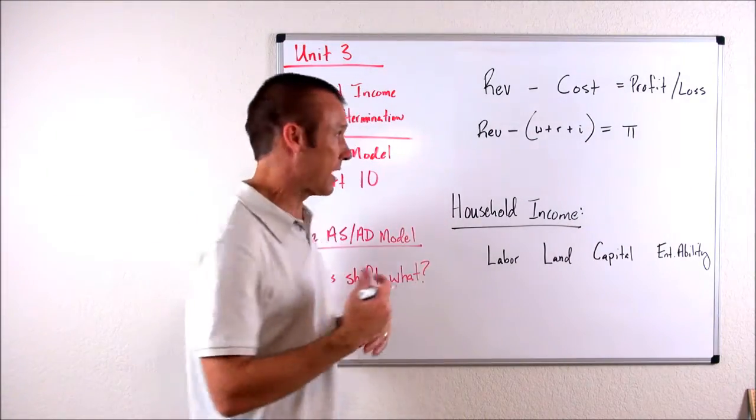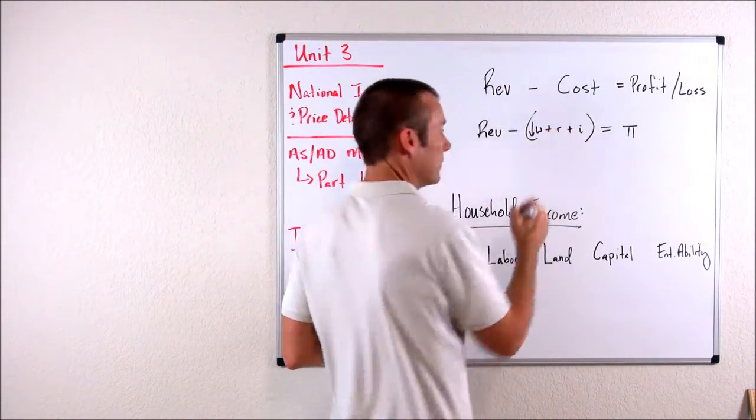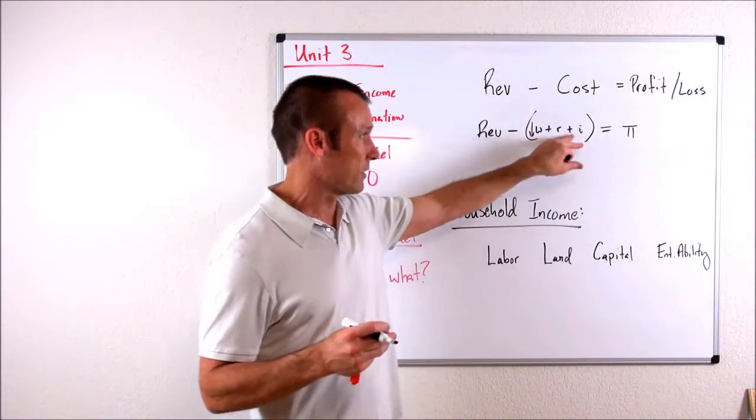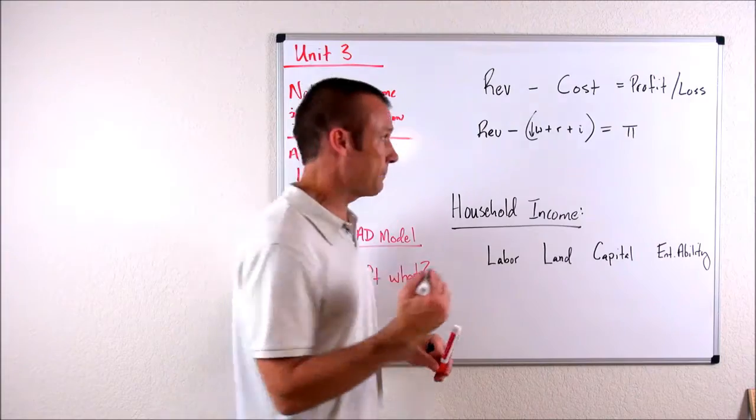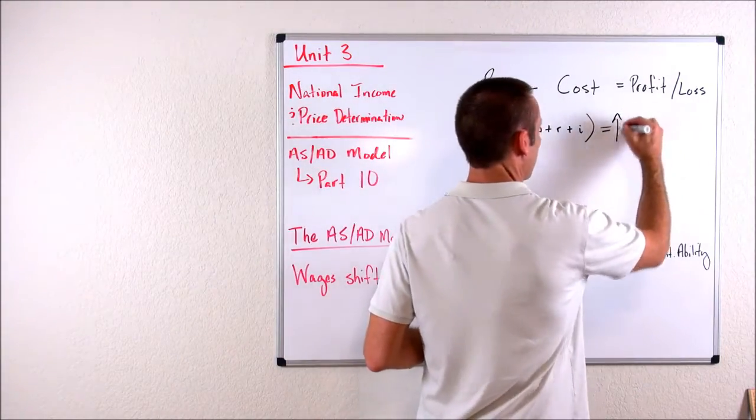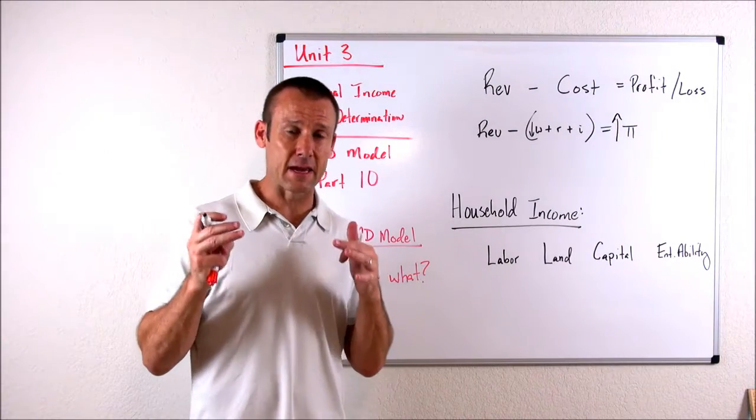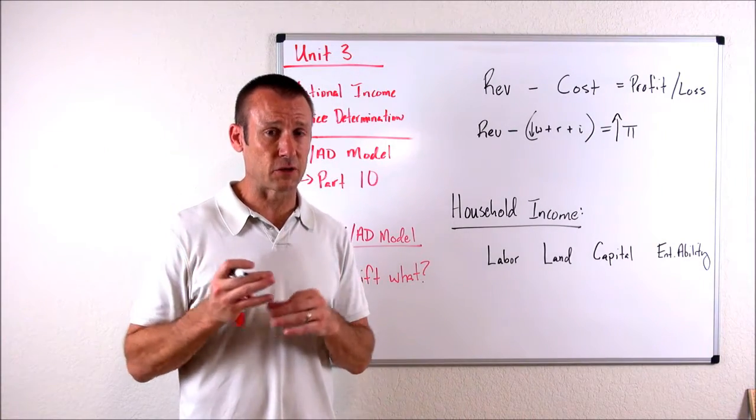So if wages go down, ceteris paribus, everything else held constant - revenue doesn't change, rent and interest don't change - what's going to happen? It's going to become more profitable to produce.